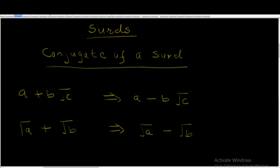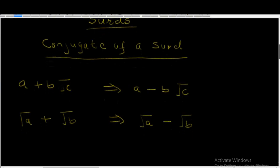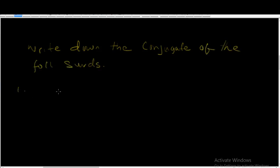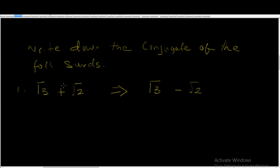Now let's take some more examples. We're going to write examples of the conjugate of a surd. Write down the conjugate of the following surds. Number one: √3 plus √2. The conjugate of this surd can be written as √3 minus √2. All you do is change the plus sign to a minus sign.